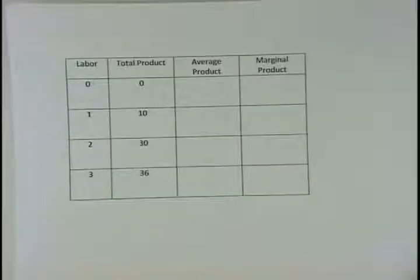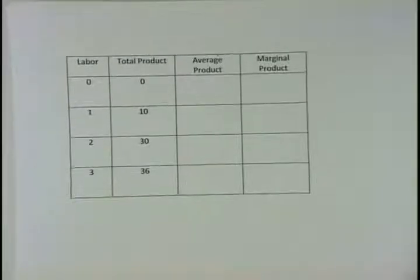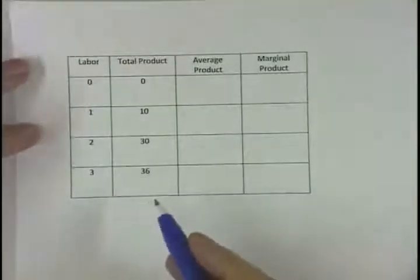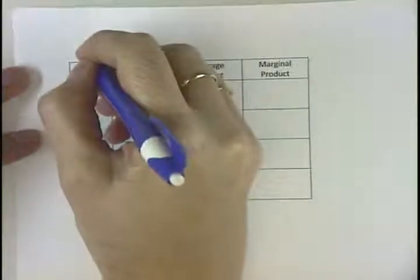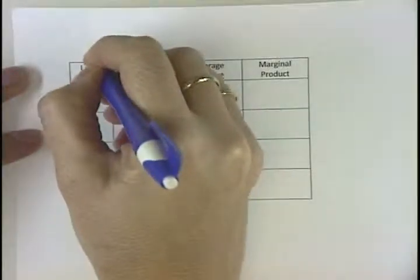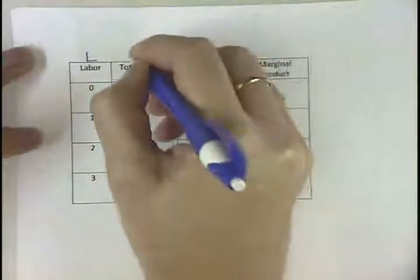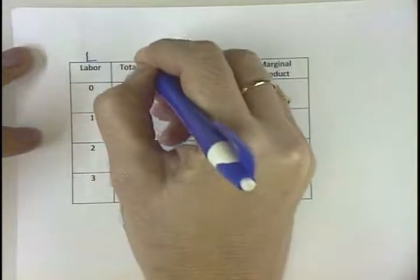For this video we're going to learn how to calculate average product of labor and marginal product of labor. So if you're given a table like this, we're going to give these little symbols. We're going to say L is for labor, and total product would be our Q — quantity.